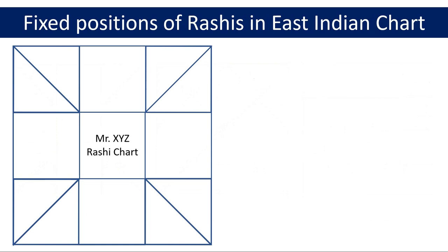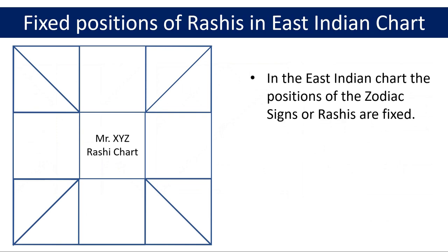The most important thing you need to be aware of about the East Indian chart is that the positions of the zodiac signs or Rashis are fixed. I'm showing the first zodiac sign Aries or Mesha in the chart, which is shown here with the two-letter abbreviation AR. Aries sign could also be represented with the zodiac symbol for Aries or number one in the chart. Please note that the position of the zodiac sign Aries or Mesha will always be in this square in any East Indian chart.